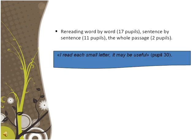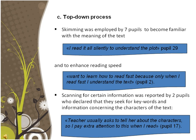In the phase of reading again and again, pupils preferred reading word by word or sentence by sentence rather than reading the whole passage all over. Regarding the top-down approach, skimming was only employed by a minority of the pupils, not only to become familiar with the meaning of the text but also to enhance reading speed. Scanning for certain information was reported by two pupils, who declared that they seek for keywords and information concerning the characters of the plot.